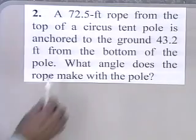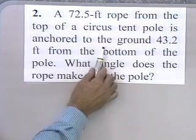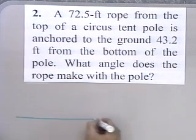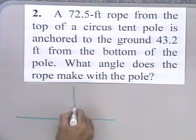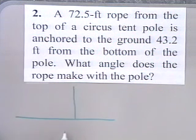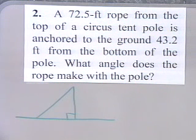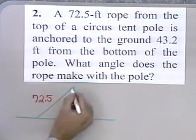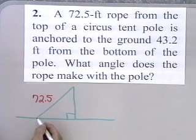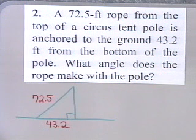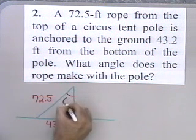Here's our next problem. Problem number two: a 72.5-foot rope from the top of a circus tent pole is anchored to the ground 43.2 feet from the bottom of the pole. What angle does the rope make with the pole? I'll draw the ground, the tent pole coming up, and a rope from the top of the tent pole to the ground. I assume the pole makes a 90-degree angle with the ground. The rope is 72.5 feet long, and it's anchored 43.2 feet from the bottom of the pole. I want to find angle theta that the rope makes with the pole.